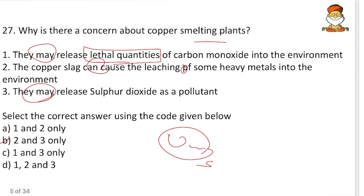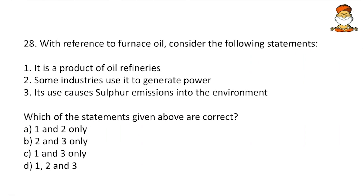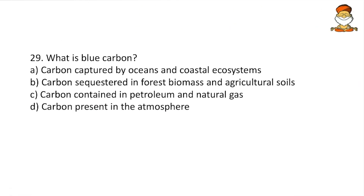Question 28: With reference to furnace oil - it is a product of oil refineries, some industries use it to generate power, and its use causes sulfur emission into the environment. All statements are moderate. It's impossible to prove it's not a product of oil refineries; somewhere in the world some industry uses it for power generation; and even 0.1% sulfur emitted is still emission. So we go with all of the above. Question 29 on blue carbon - a very easy knowledge question, option A.